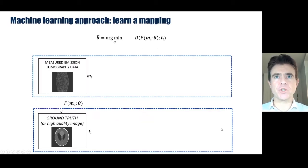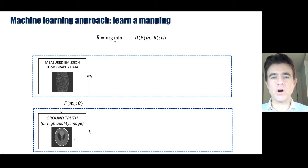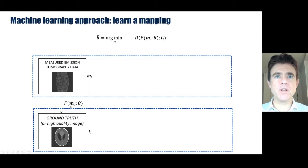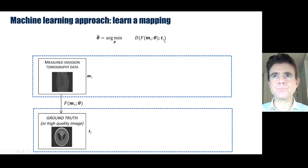This is where the machine learning approach comes in. Instead of fitting a reconstruction X to noisy data, we estimate a mapping that takes us from noisy data directly to a high-quality reference — such as the ground truth for a simulation, full k-space sampling for MR, or a very high count acquisition for PET. We're finding a mapping f — generally non-linear, though we'll start with linear — parameterized by theta, that takes measured noisy data M to a high-quality image, minimizing a loss function such as mean square error.